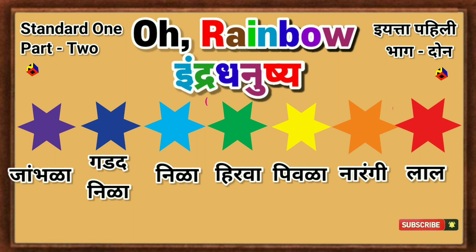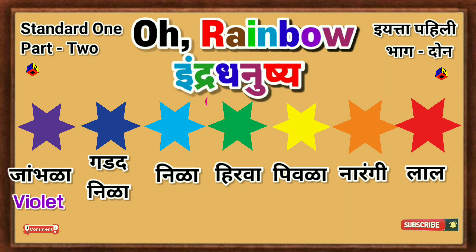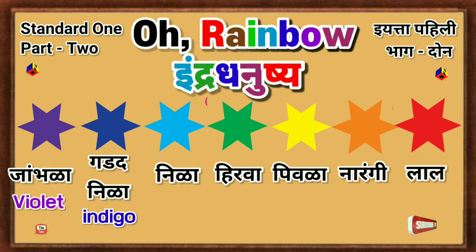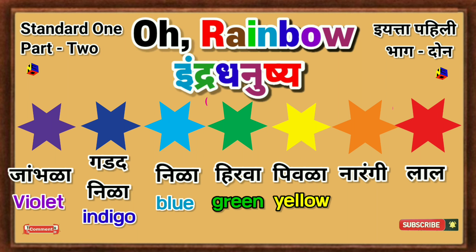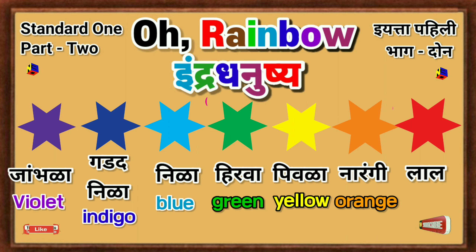Now listen to the words in English and say them after me. Violet. Indigo. Blue. Green. Yellow. Orange. Red.